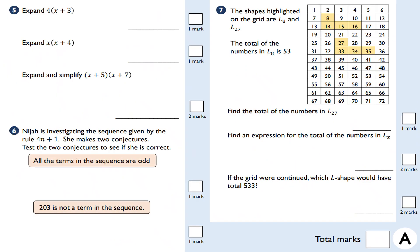Question five: expand this single bracket. I do 4 times x which is 4x, and then 4 multiplied by positive 3 which is positive 12, giving 4x plus 12. That's how we expand single brackets.